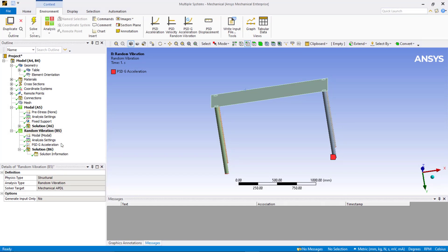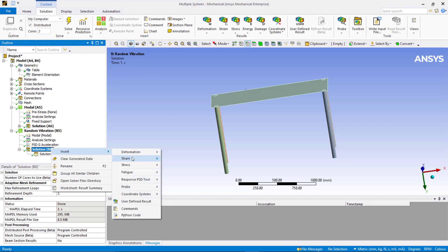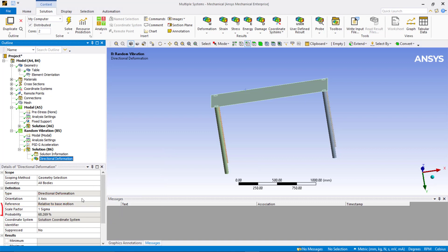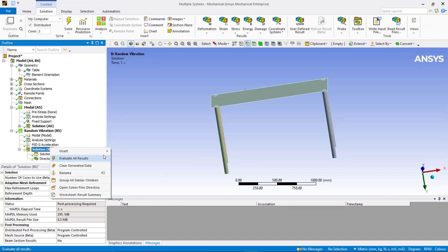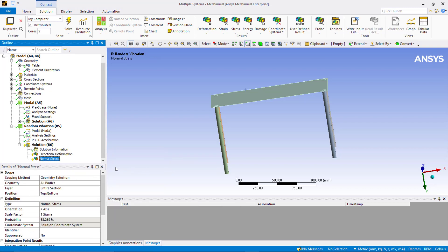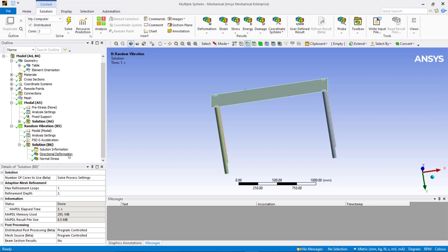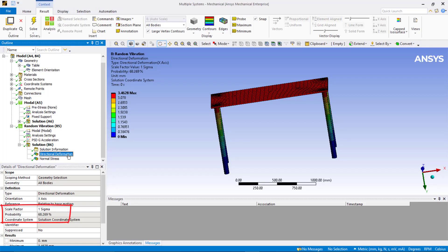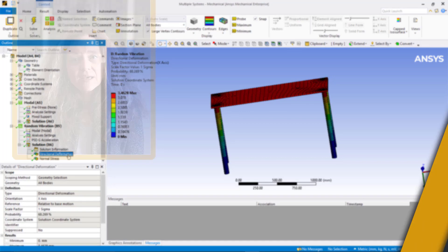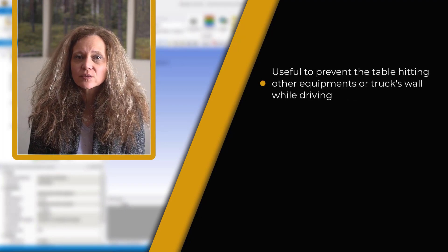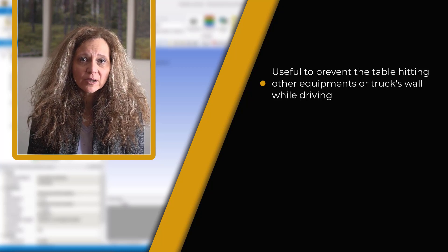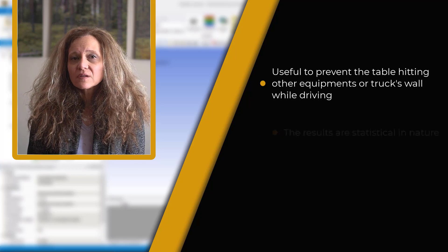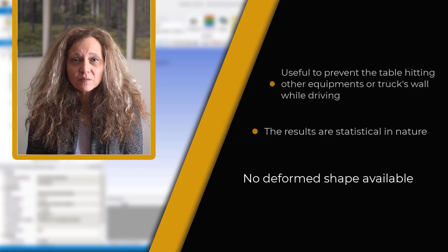Let's insert some of the results. Right-mouse-click on the solution and insert directional deformation. Set the orientation to x-axis and scale factor to 1 sigma value. Right-mouse-click on the solution and evaluate all results. The directional deformation result indicates that there is 68.3% probability that the deformation in x-axis will be at or below 3.46 mm. This finding may be useful if there is another piece of equipment next to the table and we wish to prevent the table hitting the additional equipment while driving. As we mentioned previously, the results are statistical in nature so there is no deformed shape associated with the results plot.